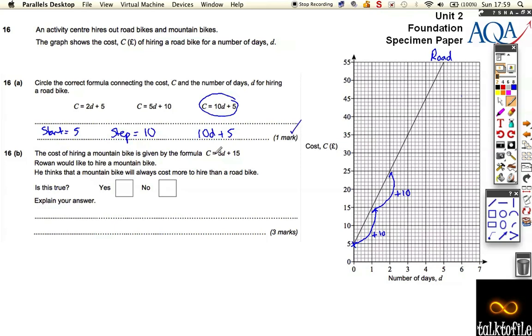The cost of hiring a mountain bike is given by this formula. If that was for a road bike up here, this is for the mountain bike. That means the mountain bike starts at 15 pounds, but this time the step every day is only 5 pounds. So it's kind of the opposite way around - for the road bike you started at 5 and it jumped up 10 every day.